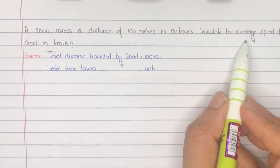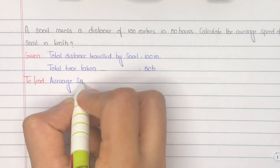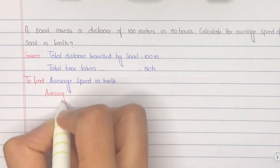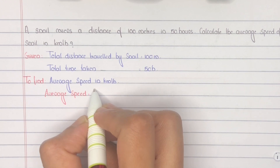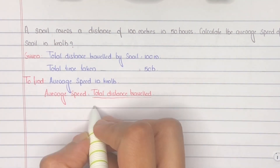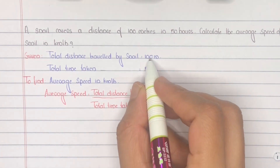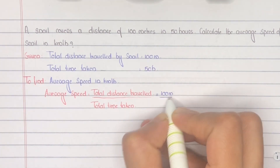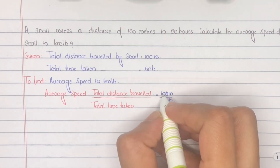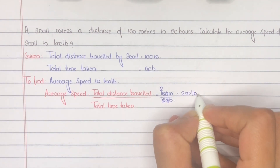Next, to find the average speed in kilometers per hour. Average speed equals total distance traveled divided by total time taken. So, this is equal to 100 meters divided by 50 hours. Canceling the common factors: 10 by 5 equals 2, giving us 2 meters per hour. Here the unit is meters per hour.